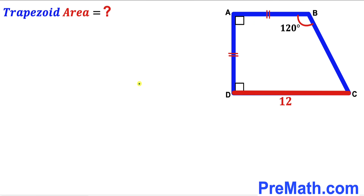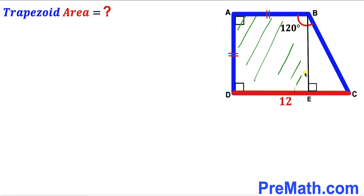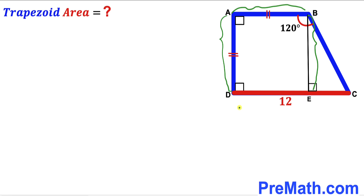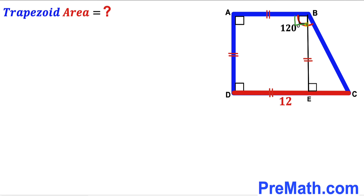Let's get started. In our very first step, we know these two sides AB and AD are congruent. I have dropped this perpendicular BE on base CD, such that we end up with square ABED, where all sides AB, AD, BE, and DE are equal in length. We can see this angle is 90 degrees, and since the whole angle ABC is 120 degrees, the remaining angle EBC is 30 degrees.